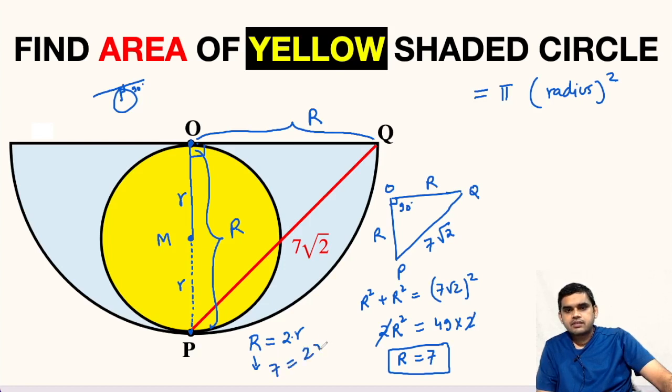We have found R as 7 units which will be equal to twice small radius. So small radius will be 7 divided by 2. Now we can substitute the value: r equals 7 upon 2 whole square. This will be 49 pi by 4 square units.